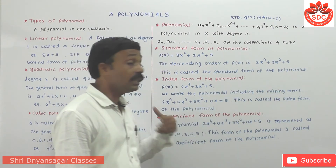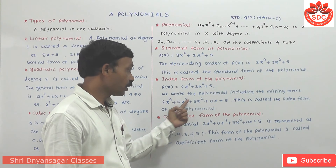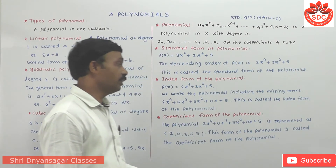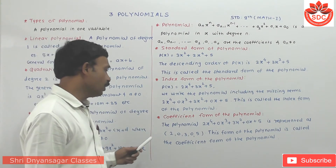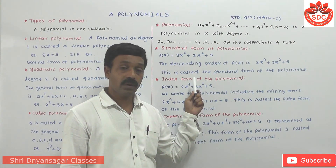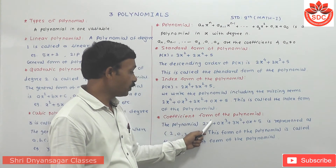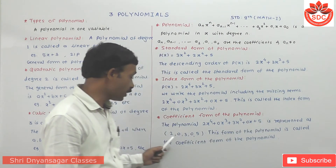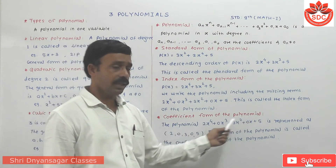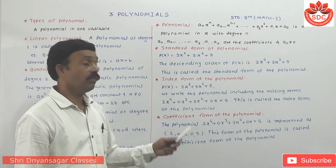Index form: we write the polynomial including missing terms. For 2x⁴ + 3x² + 5, the missing x³ term becomes 0·x³ and the missing x term becomes 0·x, giving 2x⁴ + 0x³ + 3x² + 0x + 5. This is the index form. Coefficient form: we write the coefficients as (2, 0, 3, 0, 5). If there is a minus sign, give the corresponding coefficient a minus sign.